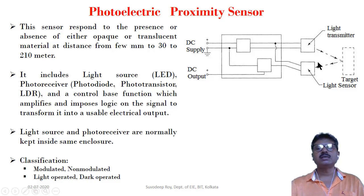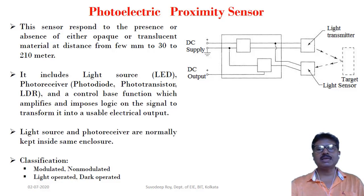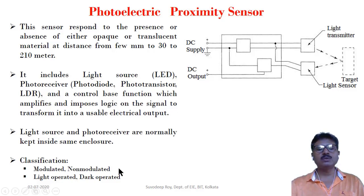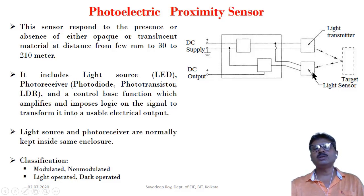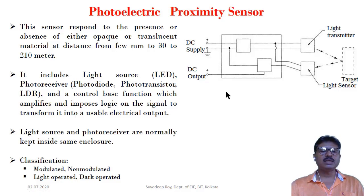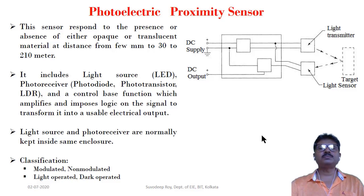The characteristic of modulated function is mainly used so that ambient light will not hamper the photoelectric process. This is modulated and non-modulated. Next is light operated and dark operated. Light operated means the presence of light produces the output — that we call light operated. Absence of light producing the output — that we call dark operated.